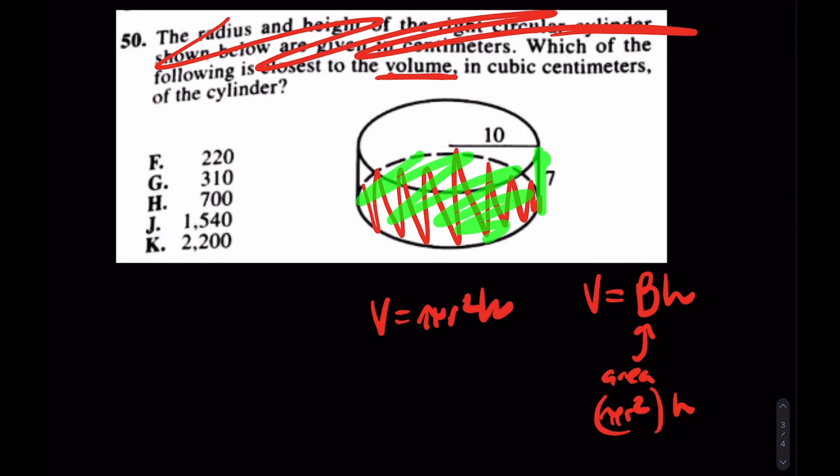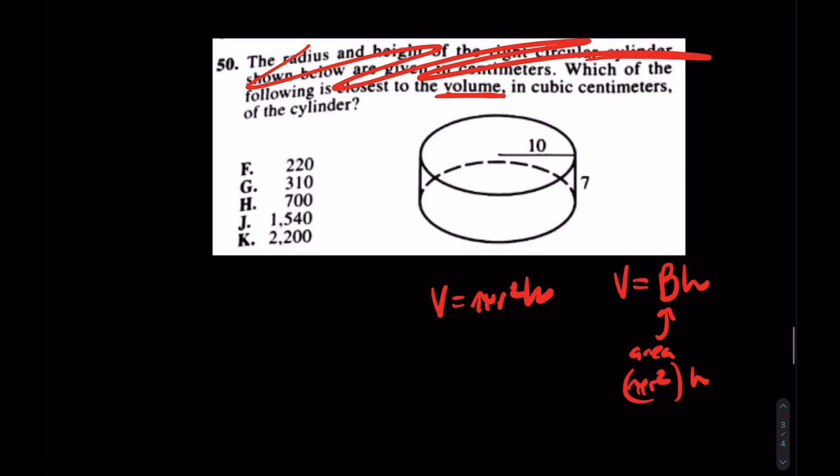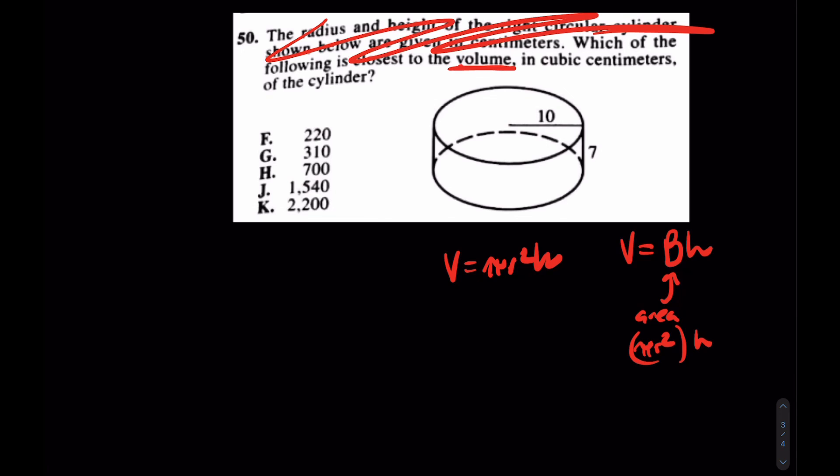So how would I do this question now? Well, it's quite simple. It's just pi times r, which is 10, squared, times the h, which is seven. You plug that into your calculator and you should end with K, 2200. If you have any questions on these three questions, please comment down below. I'd be happy to get back to you.